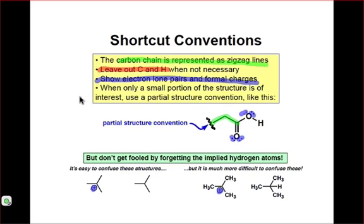Finally, when only a small portion of an organic molecule is of interest, we will use a partial structure convention. For instance, if we were only concerned with the carboxylic acid functional group of a much larger organic molecule, we could use a squiggly line or a partial structure convention to represent the rest of this molecule rather than draw it out. Last but not least, I'll warn you of this now. Do not get fooled into forgetting implied hydrogen atoms. It is one of the easiest traps to fall into when looking at an organic structure.